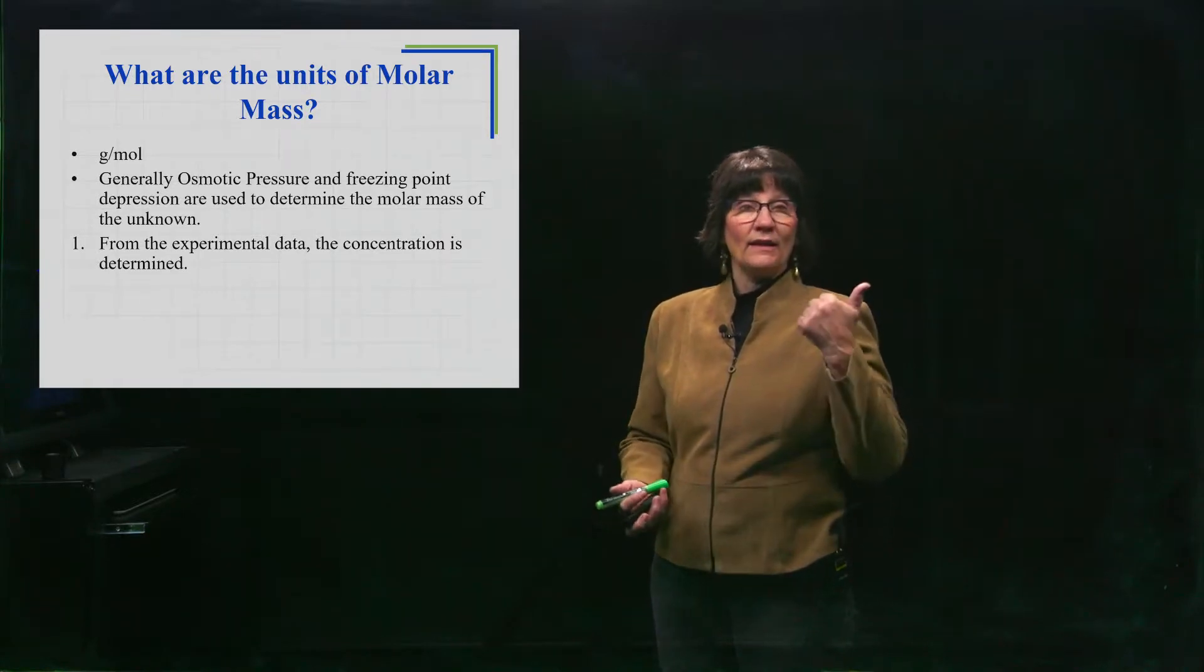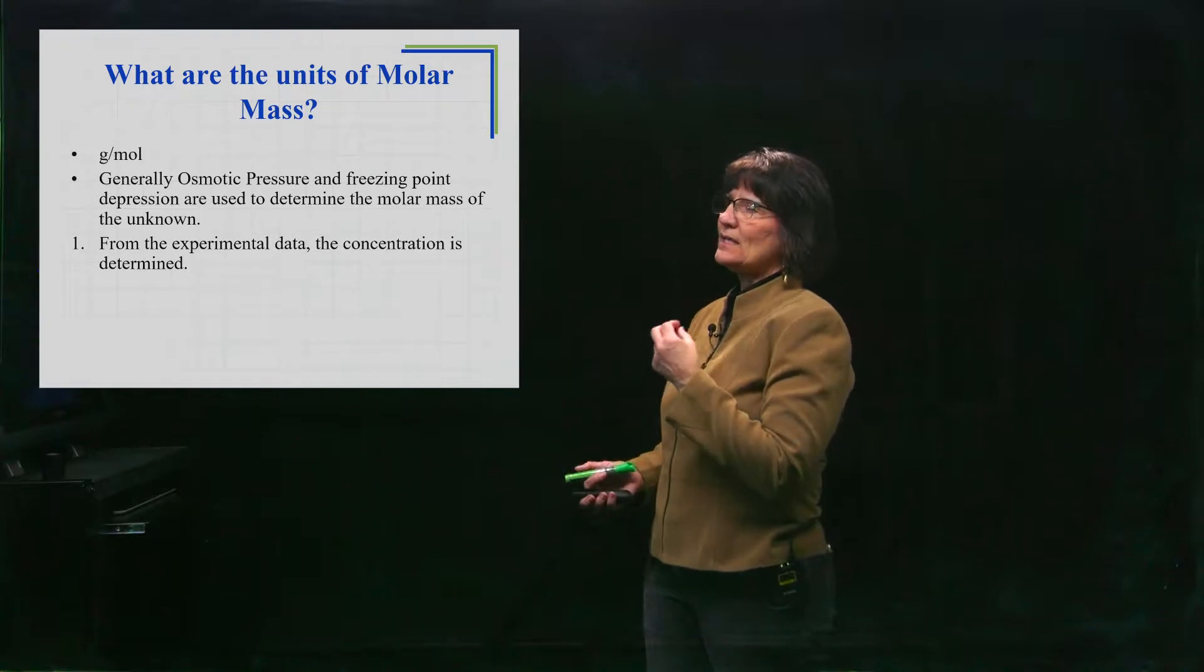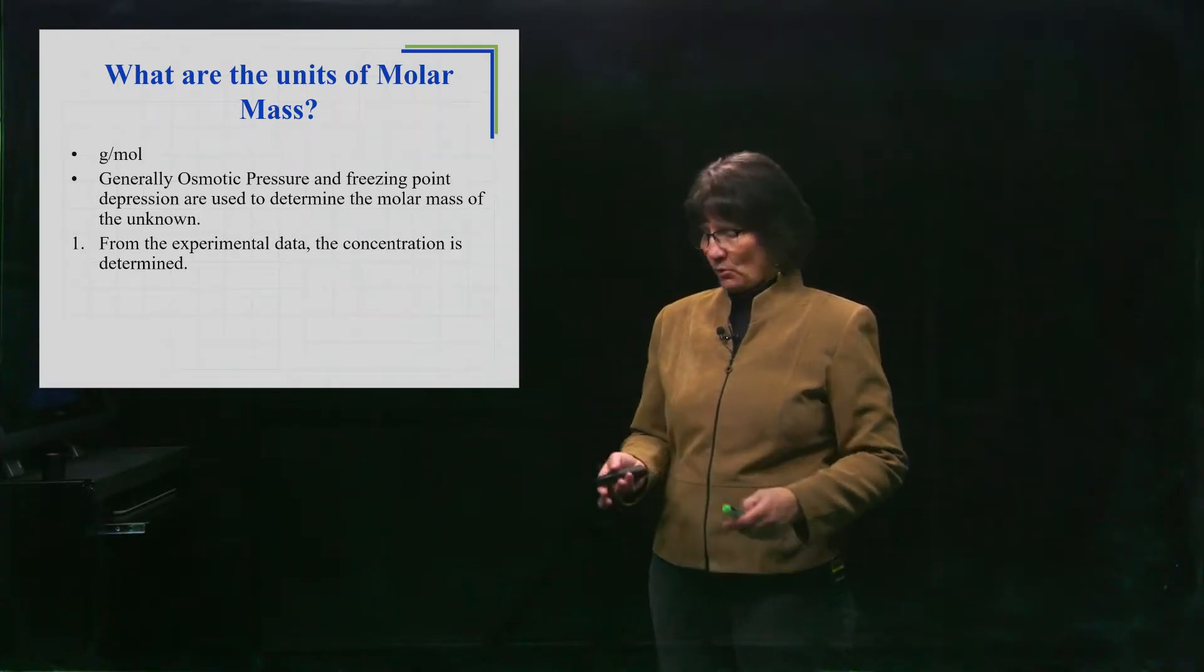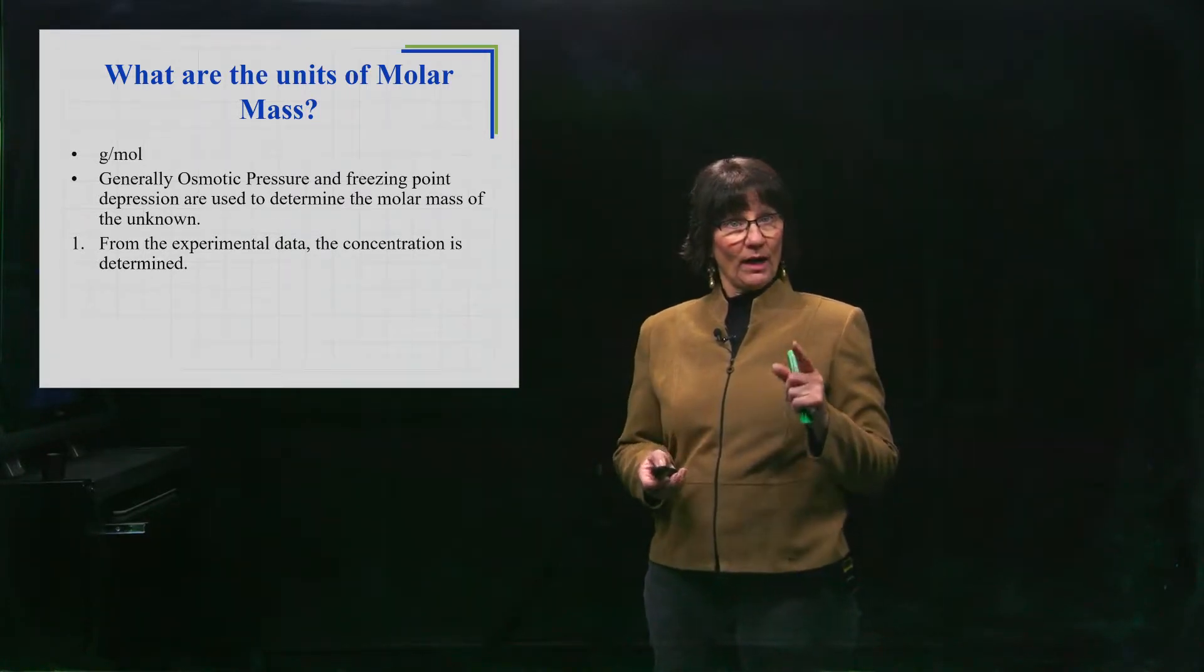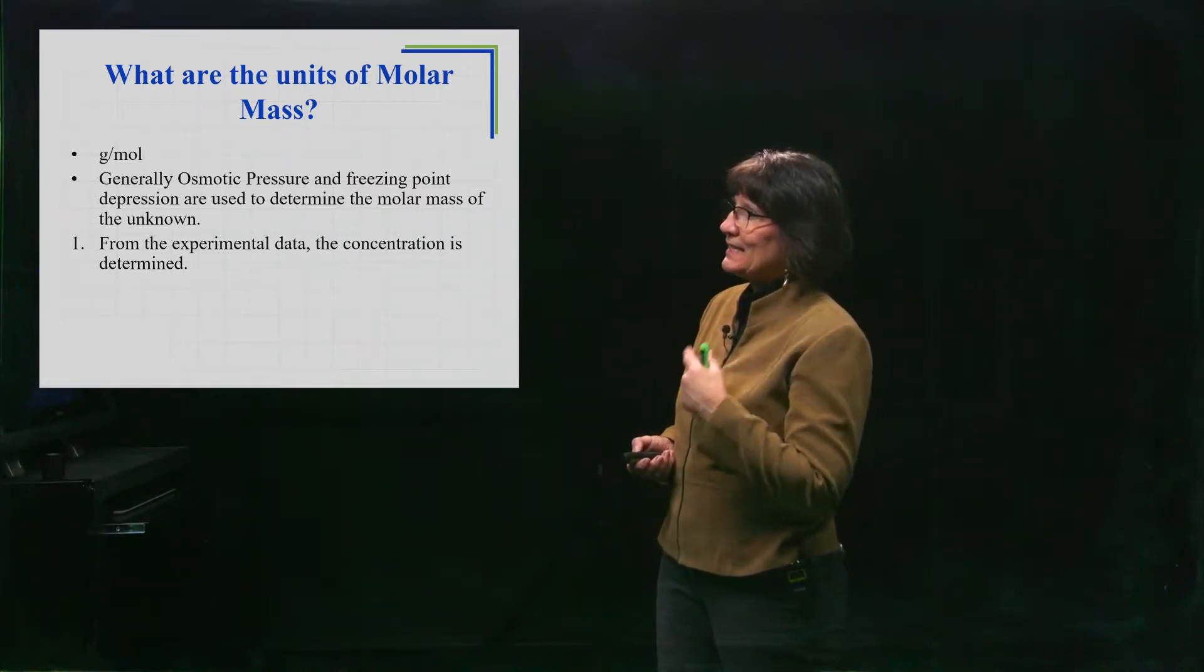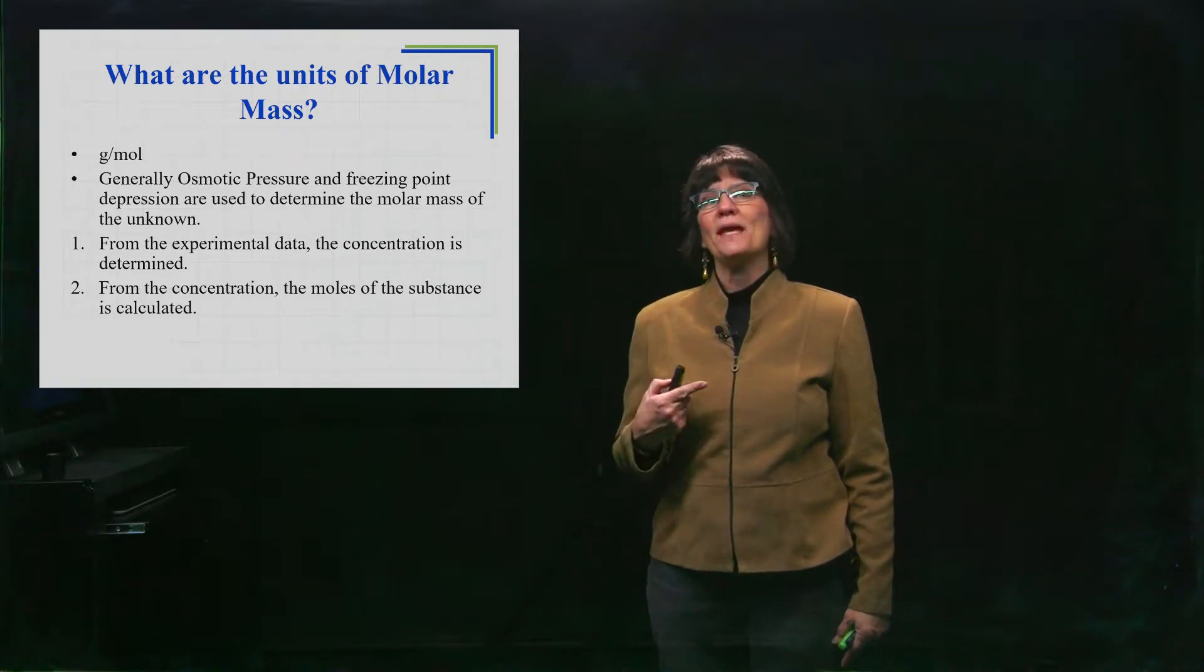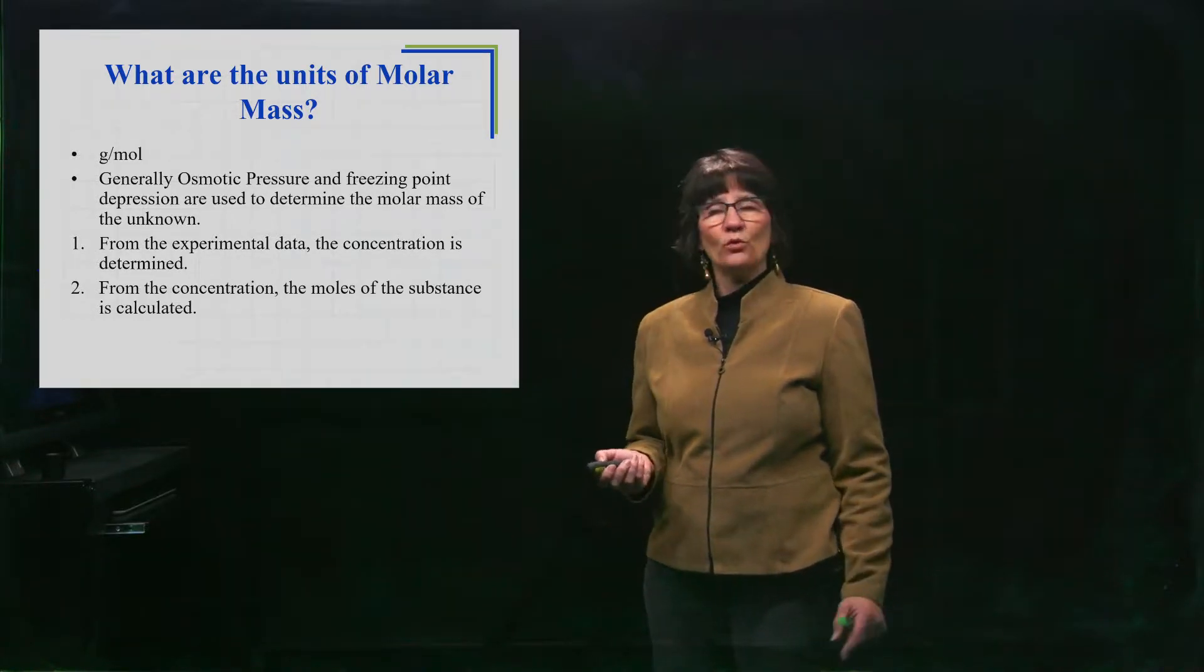And again, in the case of freezing point depression, it's going to be molality. In the case of osmotic pressure, it's going to be capital M, molarity. Now molarity and molality have mol per something in there. It has embedded inside of it the moles that we need to get the molar mass. So from that concentration unit, we're going to be able to obtain the moles we need of that substance.